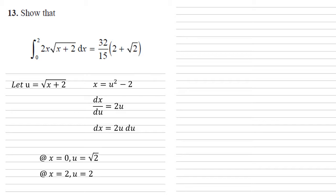Now putting all of this into our integral, we've replaced the bounds, so 0 and 2, now root 2 and 2. We've replaced that first x with u squared minus 2. We've replaced the square root with u. And we've replaced the dx with 2u du.